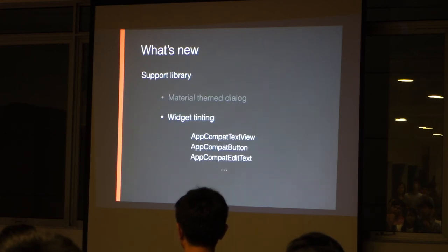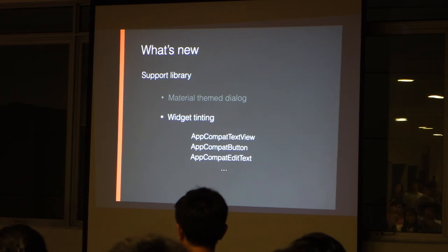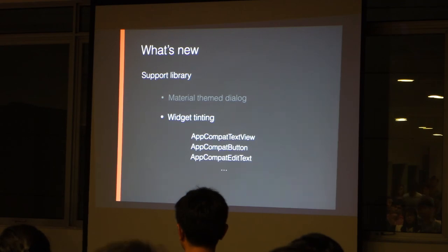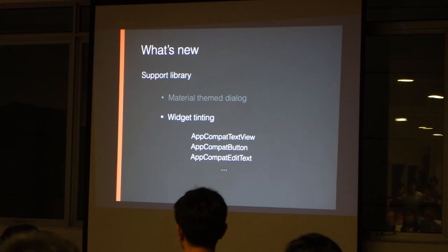There's also widget tinting. Most widgets will now be automatically tinted using the color theme attributes you put in your theme resource. It will work unless you have a custom view — then you'll have to extend the AppCompat version of the widget, like AppCompatTextView or AppCompatButton. Previously this wasn't supported and we had to use a color filter. But now it's supported and the library handles it for older API versions — on Lollipop it uses native functions, and on pre-Lollipop it falls back to color filters. No more boilerplate code to write.